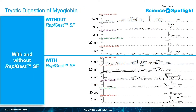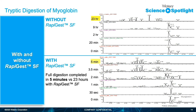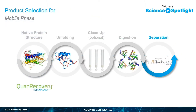Here we can see how denaturing with RapiGest prior to digestion can aid in process efficiency. Myoglobin required an overnight digestion without RapiGest, but with RapiGest, only required a five-minute digestion. You can also see the improvement in peak height after the RapiGest aided digestion and separation. Using RapiGest prior to digestion removes the need for desalting and can improve digestion efficiency, improving your overall process efficiency.